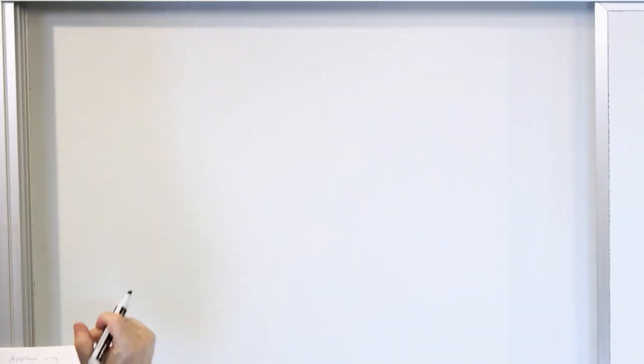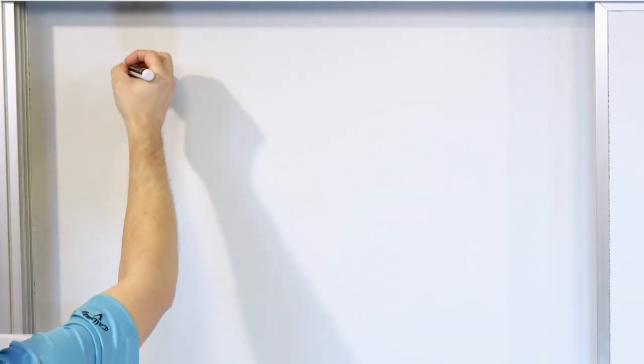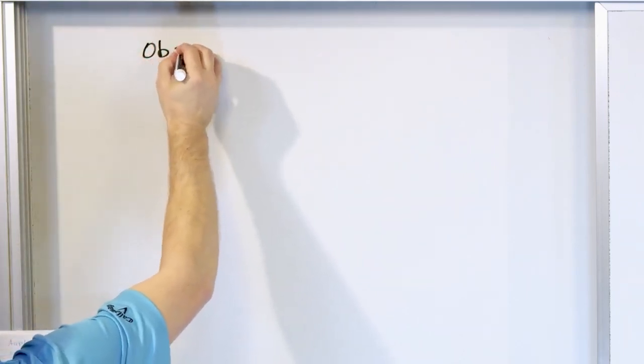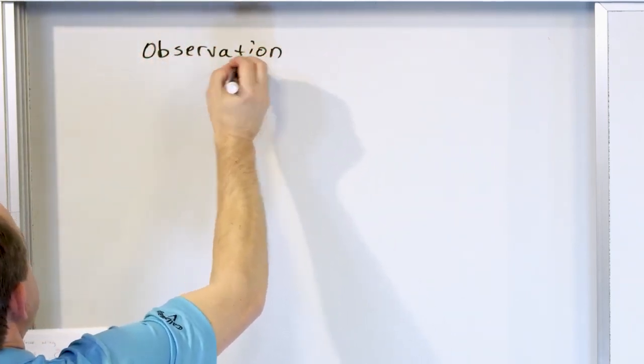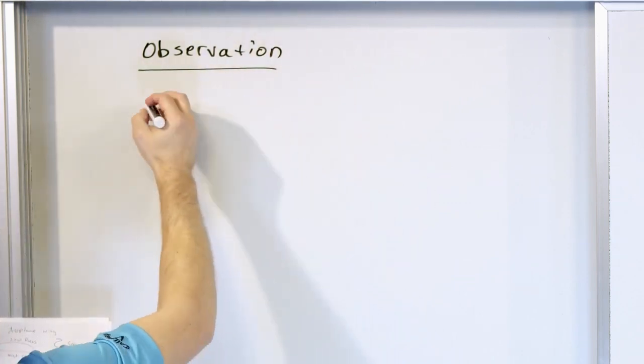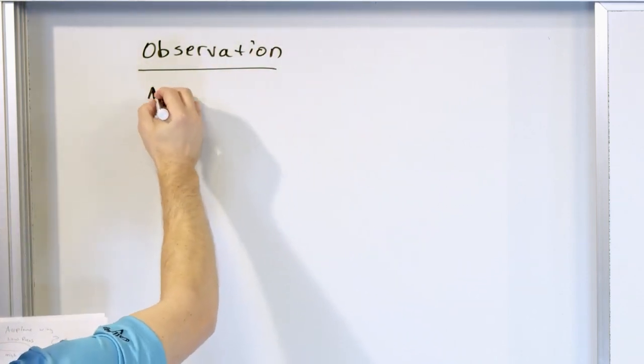Moving air means lower pressure. A lot of people know that, but what we want to do now is transition to talk about why. It seems backwards — why would moving air mean lower pressure? The observation is: when we have a high velocity, this must correspond to a low pressure, because that's the only way to describe what we saw.